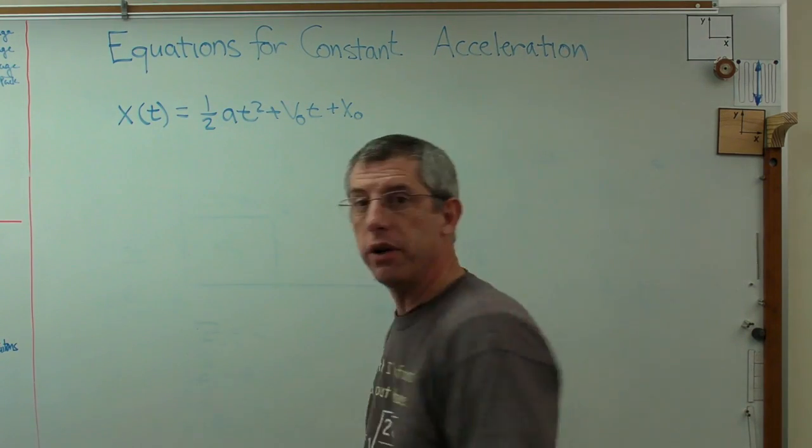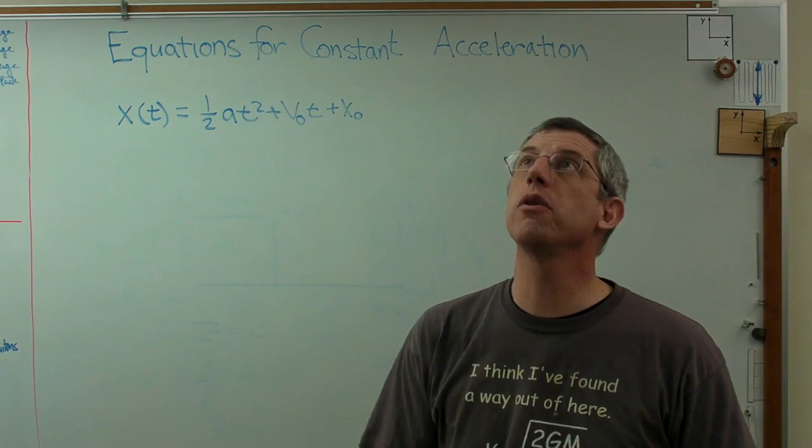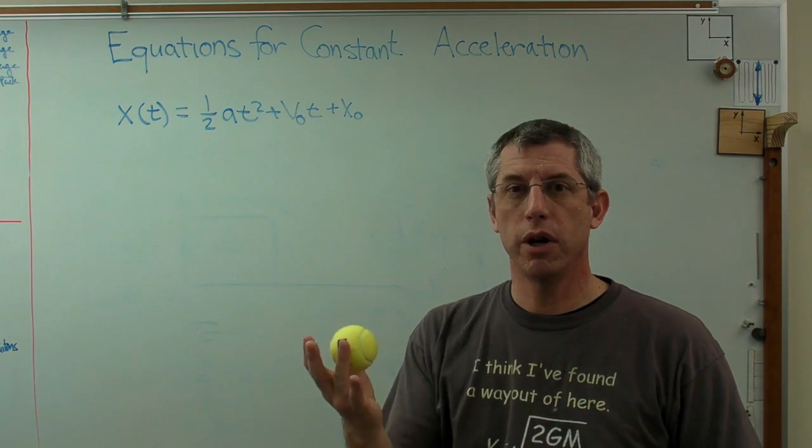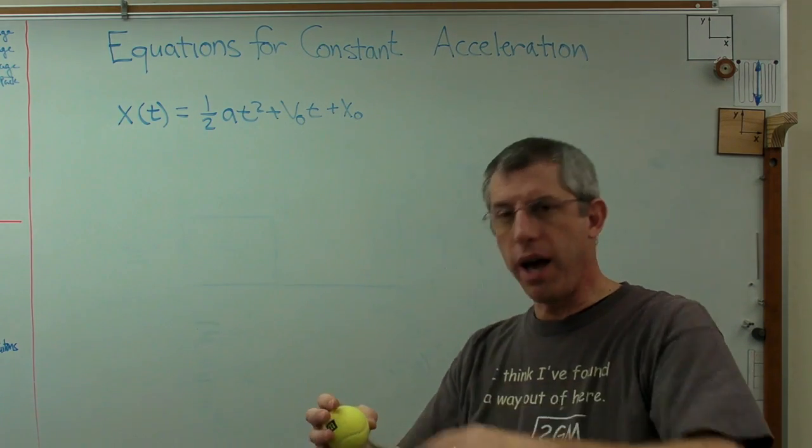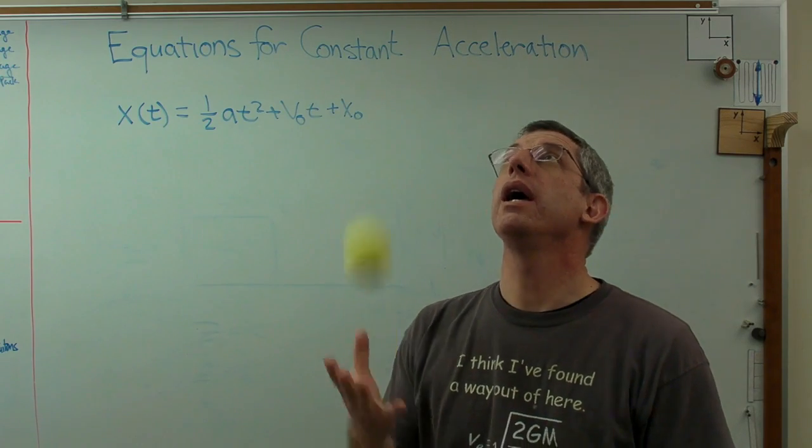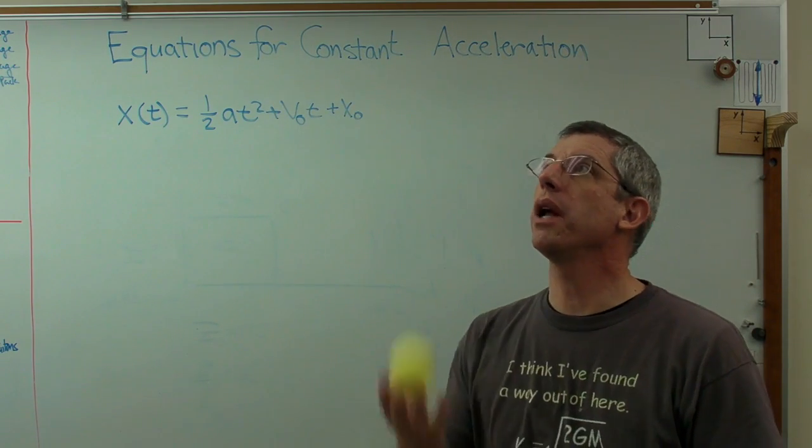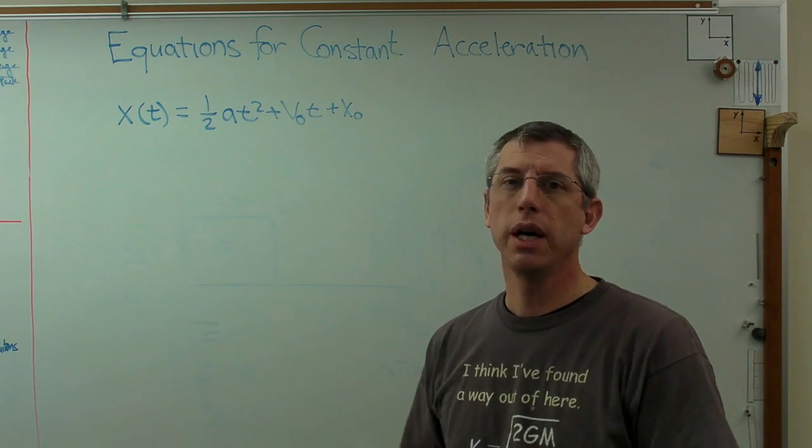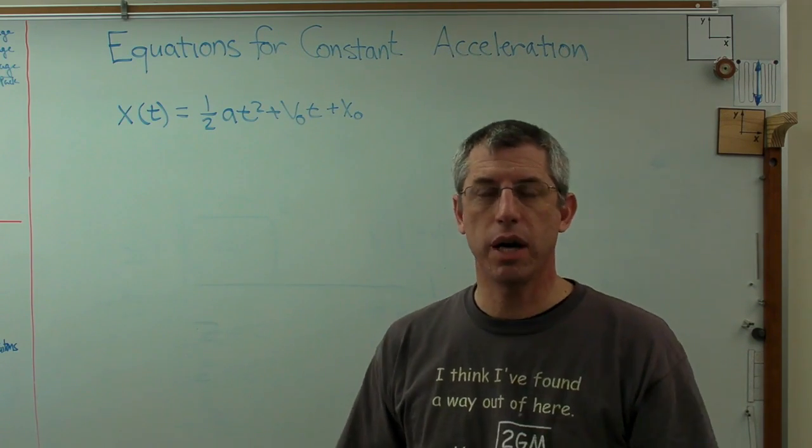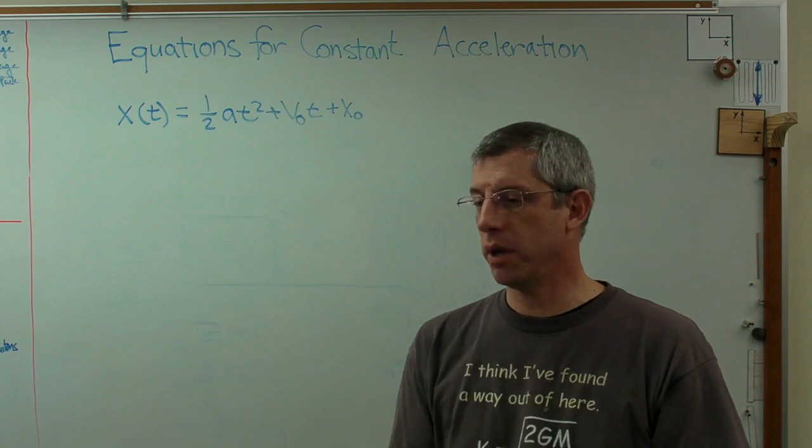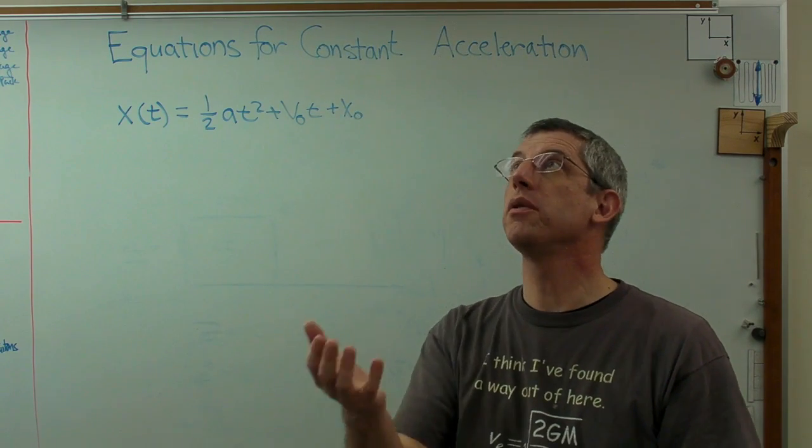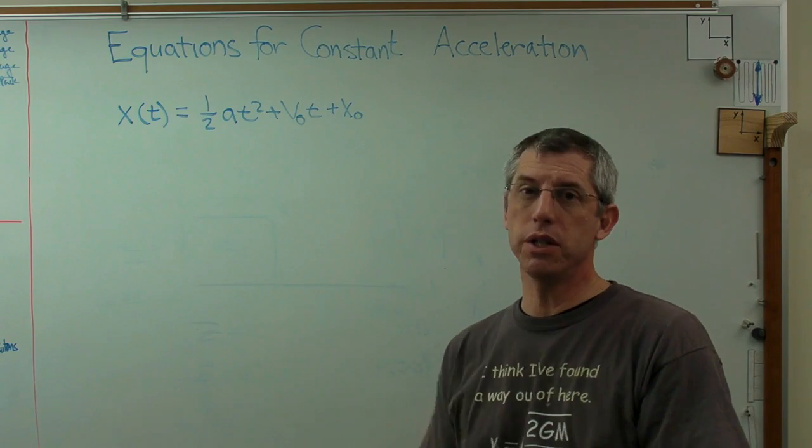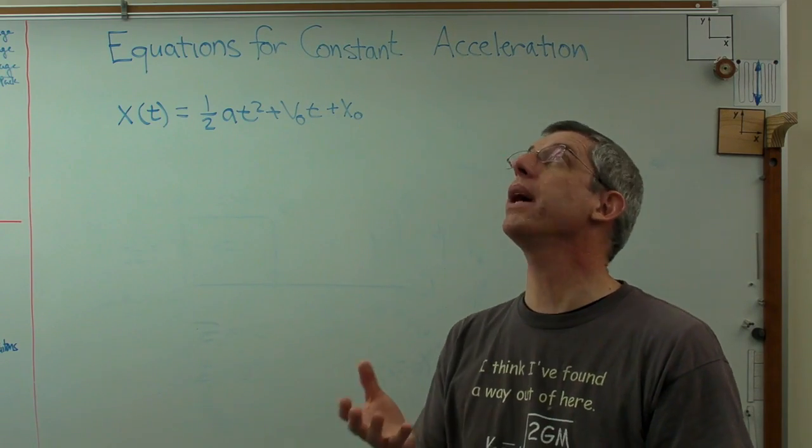So if I look at this ping pong ball with relation to the floor, if I throw it up in the air starting right here, well that's what, a meter and a half above the ground I suppose, and so the initial velocity is whatever it is when I let go of it, a meter or two per second I suppose, and the acceleration is down minus 9.81. So the initial position is positive, initial velocity is positive, but the acceleration is negative. Well that's why it comes back down.